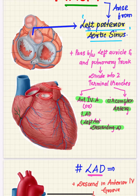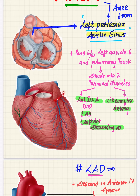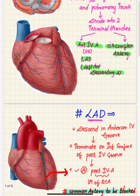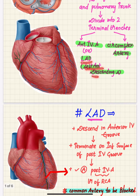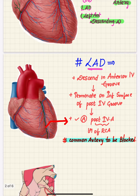After passing between the left auricle and pulmonary trunk, it terminates into the anterior interventricular artery and the circumflex artery. This anterior interventricular artery is also called the left anterior descending artery, or LAD.